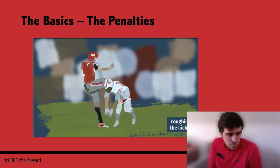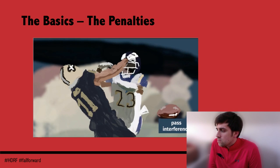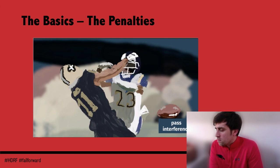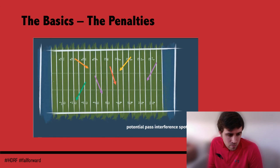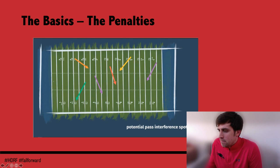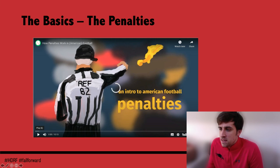Pass interference can be on the offence or defence, but is more commonly committed by the defence. Once the quarterback throws the ball, the defender cannot impede the receiver's path to the ball by grabbing, holding, tripping, or tackling. In the NFL, the penalty for defensive pass interference places the ball at the spot of the foul — which could be 70 yards up the field. In college, high school, and here in the UK it's just a 15-yard penalty even if the foul took place beyond that. If pass interference is committed in the end zone, there are no free touchdowns — instead the ball is placed on the one-yard line.